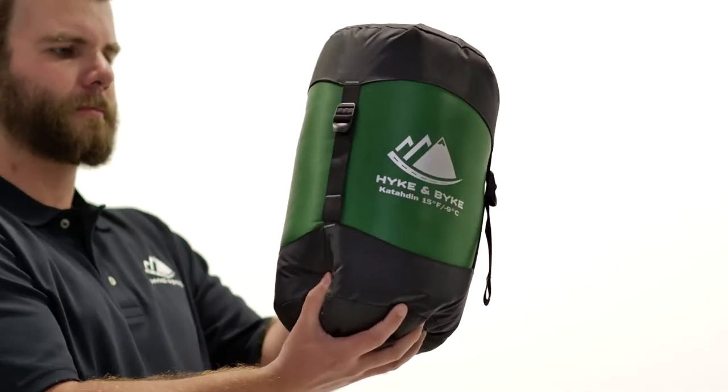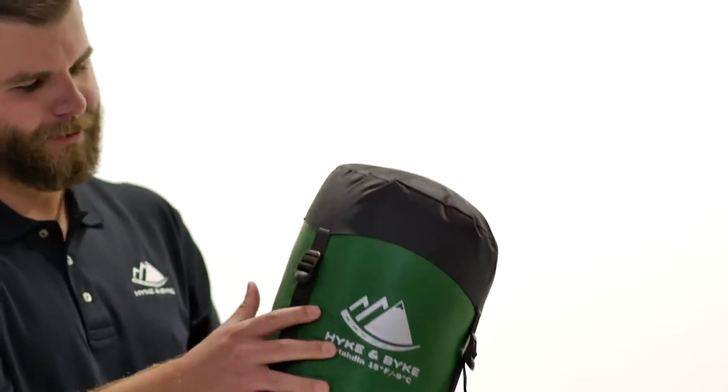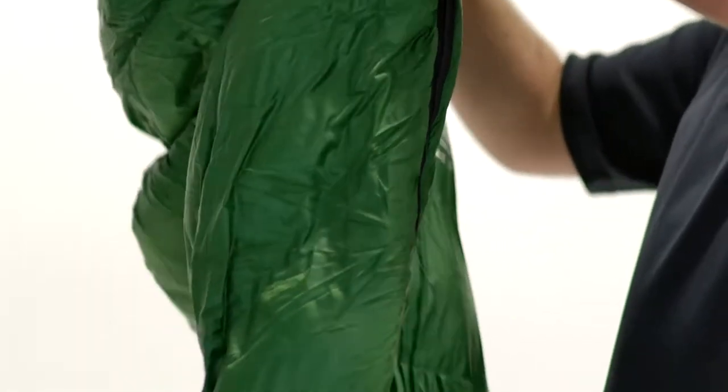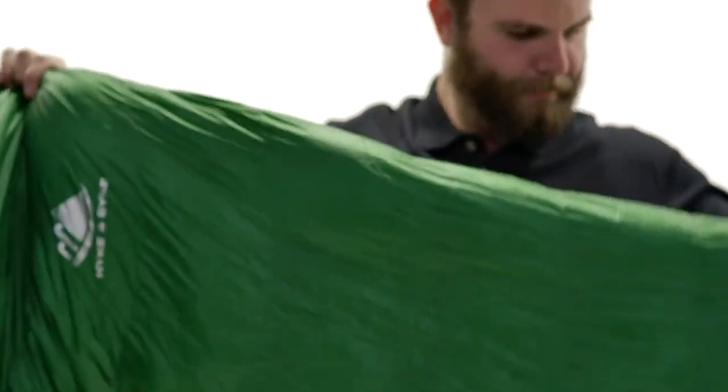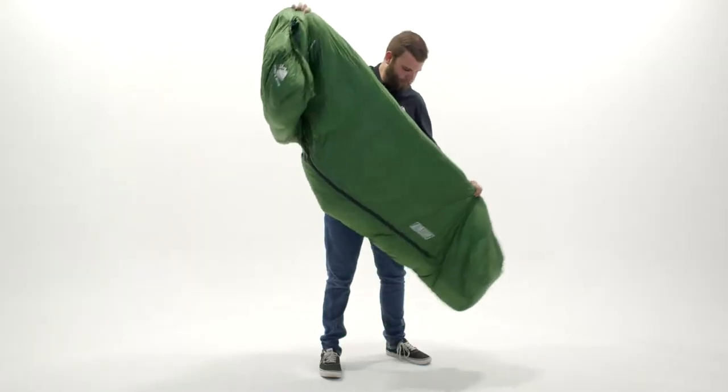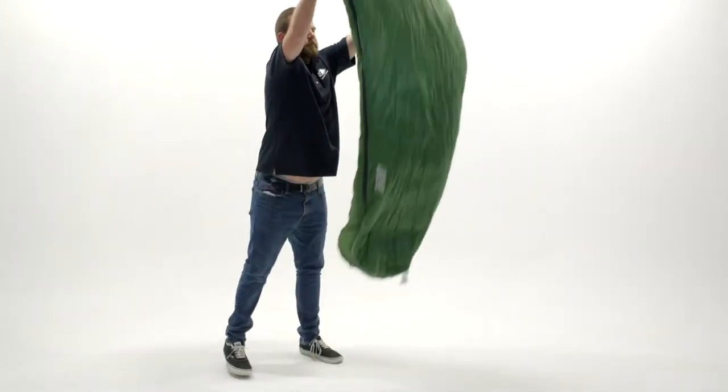This is our Hike and Bike Katahdin advanced synthetic sleeping bag series. We offer this bag in 32 degrees, 15 degrees, and zero degrees Fahrenheit models in several colors. It's a streamlined design with horizontal baffles to facilitate even temperature distribution from side to side and head to toe.